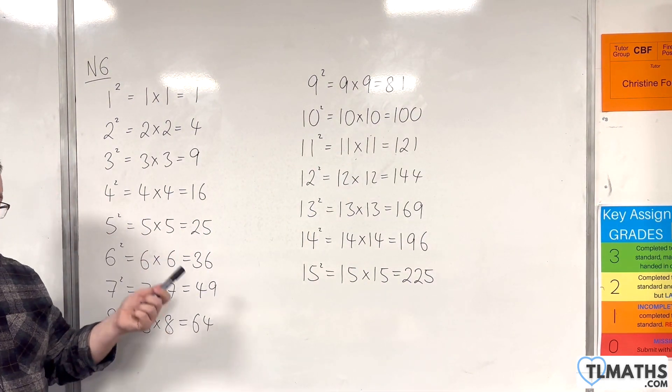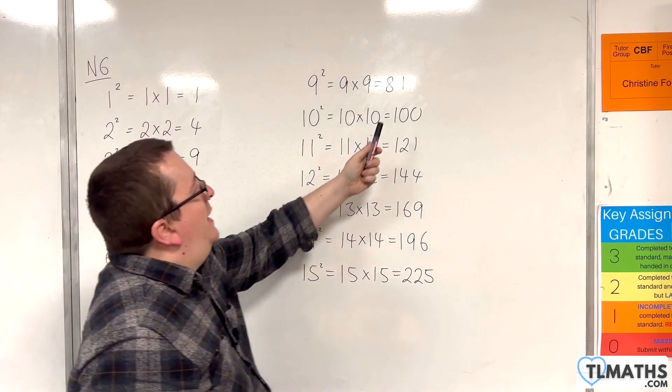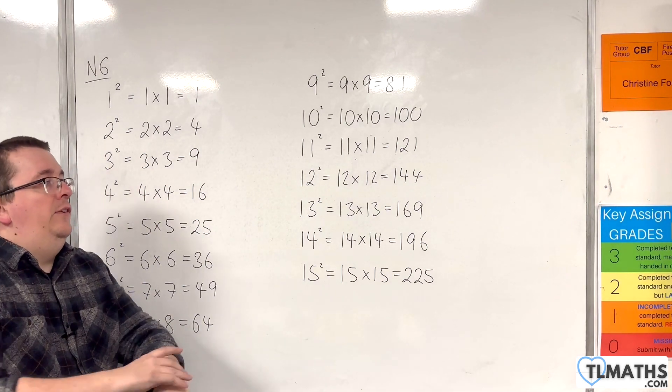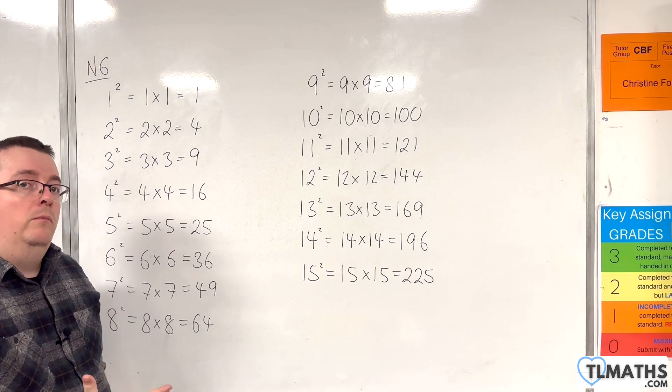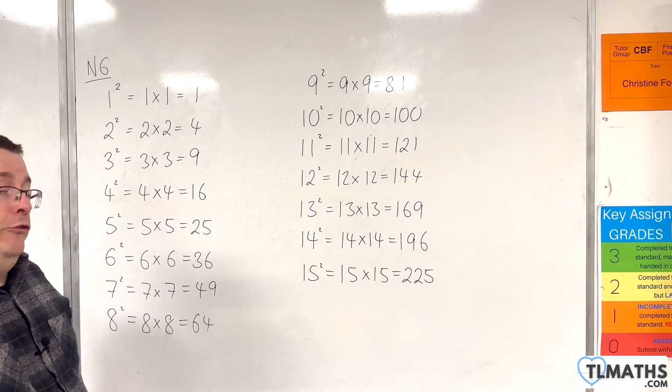So that's square numbers. Each of these numbers that we've got here on the right-hand side, we refer to as a square number, because it has a whole number square root. So square roots then.